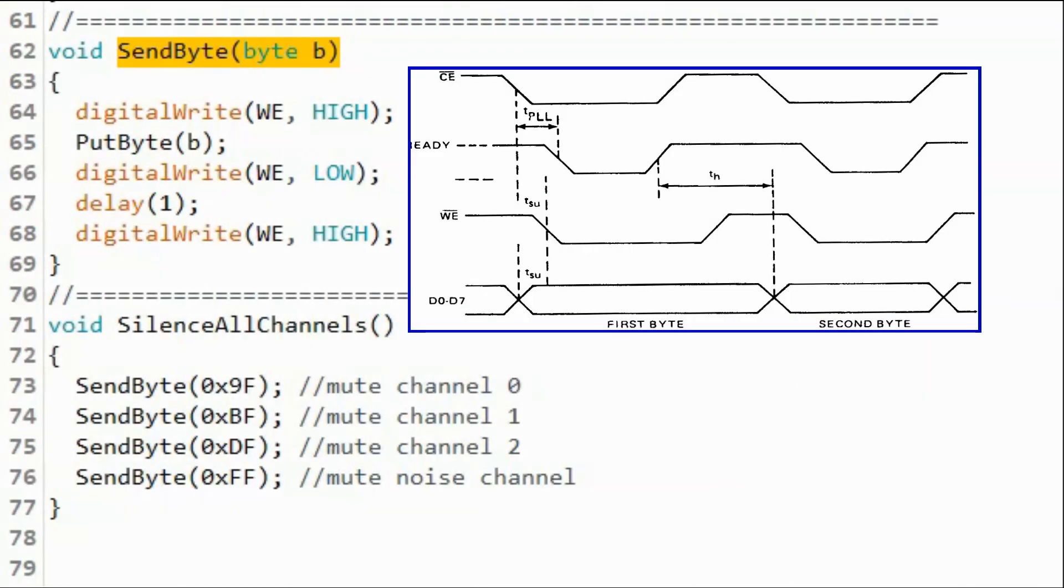With reference to the timing diagram from the datasheet of the IC, in order to send a byte from a microprocessor to the IC, we need to first make sure that the chip enable is low and that the write enable is high.